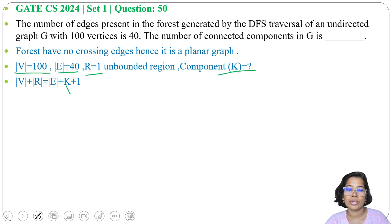R equals to 1 and we need to find K. Then R is 100 plus 1 equals to 40 plus K plus 1. So 101 minus 41 is 60. So we found K equals to 60. There are 60 connected components.